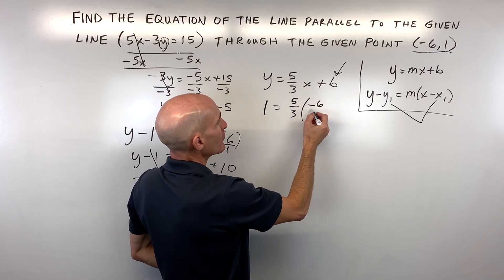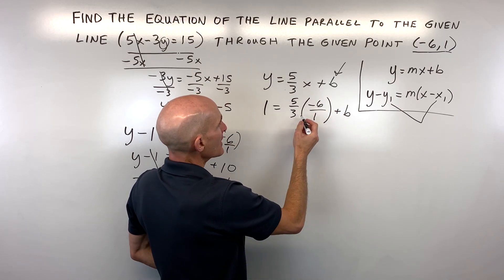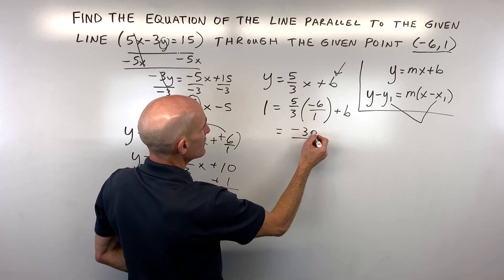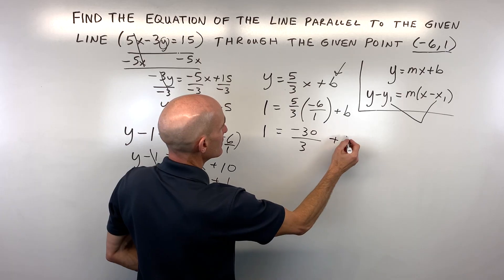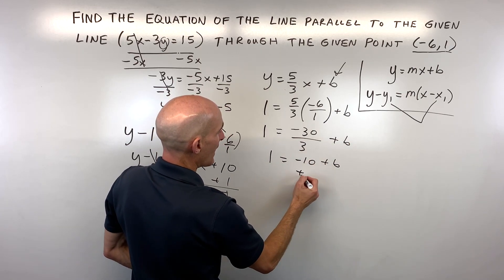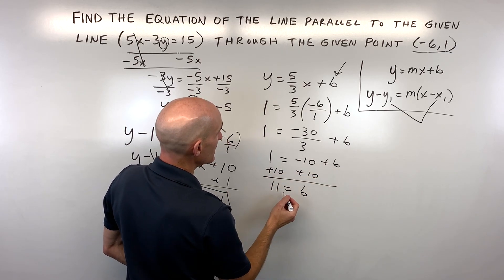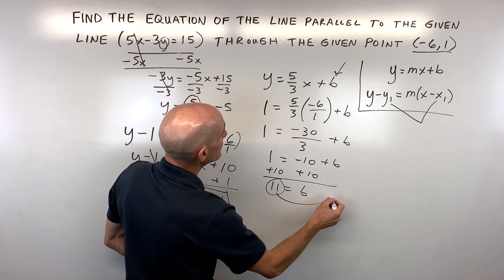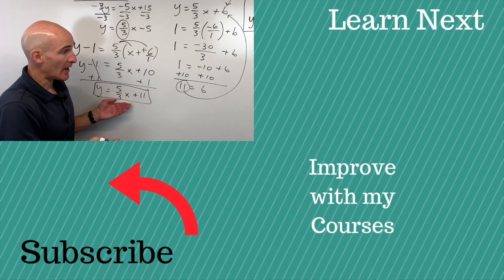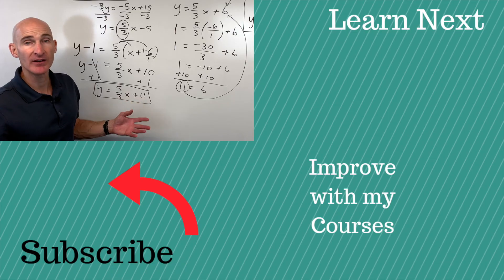Remember, any whole number like negative 6 can be written as a fraction by putting it over 1. So now it's easier to multiply the numerators together — that's negative 30 — and the denominators together, that's 3. Negative 30 divided by 3 is negative 10. Then if we add 10 to both sides to get b by itself, 11 is equal to b. We just take that 11, put it back in for b, and we get the same equation: y equals 5 thirds x plus 11.